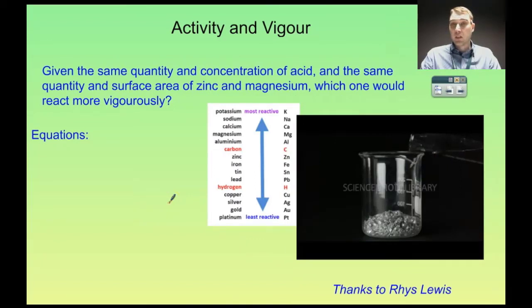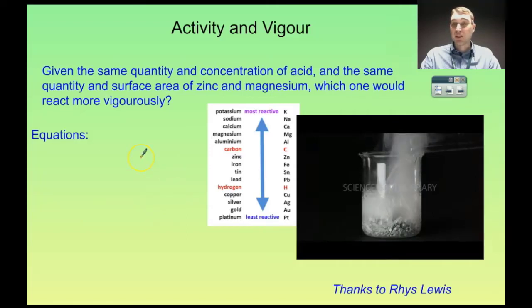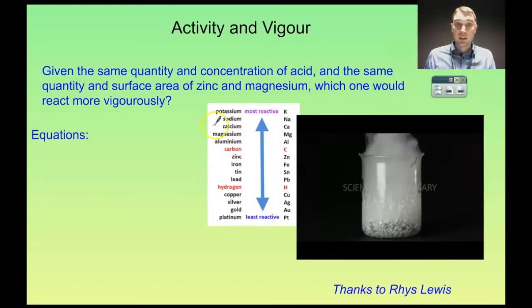So now we need to compare vigor of reaction and activity. Here I have some zinc granules. We're adding some hydrochloric acid. If we want to compare vigor we need to keep our other variables constant. The only thing we're going to change is the metal. So if we have the same quantity and concentration of acid, the same quantity and surface area of both zinc and magnesium - so these are the metals we're comparing - which one would react more vigorously?